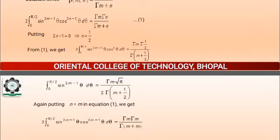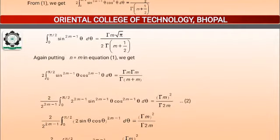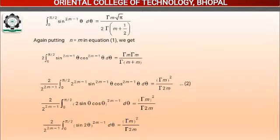Dividing both sides, and again putting N equal to M, we have twice the integral from 0 to pi/2 of sin^(2M-1)(theta) cos^(2M-1)(theta) d-theta equals Gamma(M) times Gamma(M) upon Gamma(M+M). If we multiply and divide the left-hand side by 2^(2M-1), then the integration of the left-hand part with 2 sin(theta)cos(theta) to the power 2M-1 becomes sin(2theta), and the right-hand side is Gamma(M)² upon Gamma(2M).